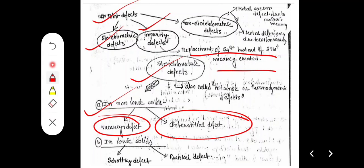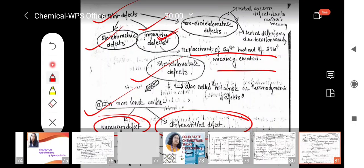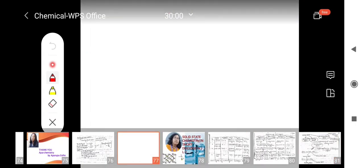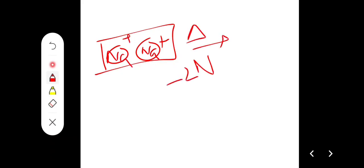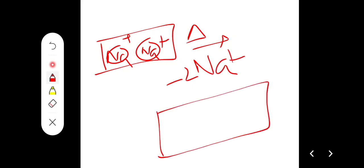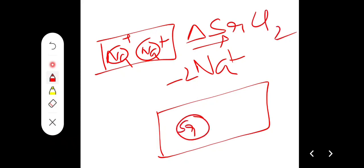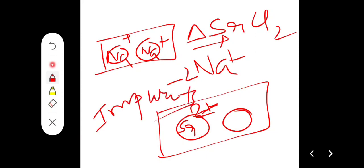Impurity defect: for example, if there are Na+ ions present and the crystal is heated with strontium chloride, one place becomes occupied by Sr2+ for charge neutralization, while the other place remains vacant. This is called impurity defect.